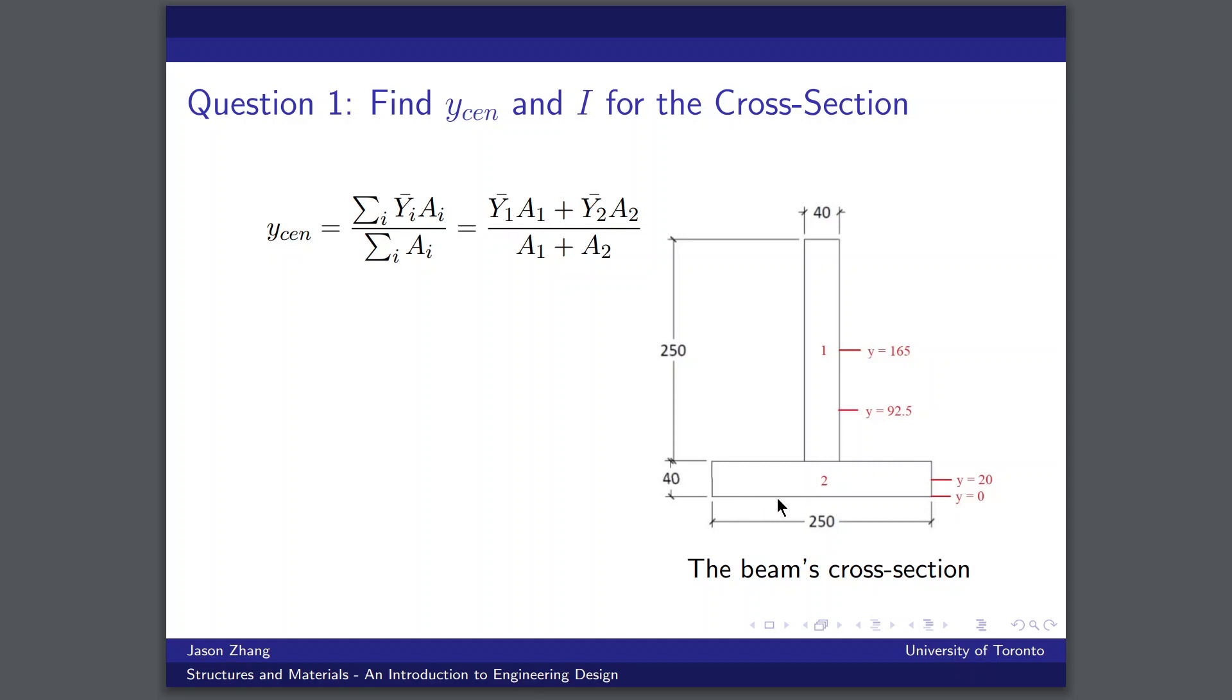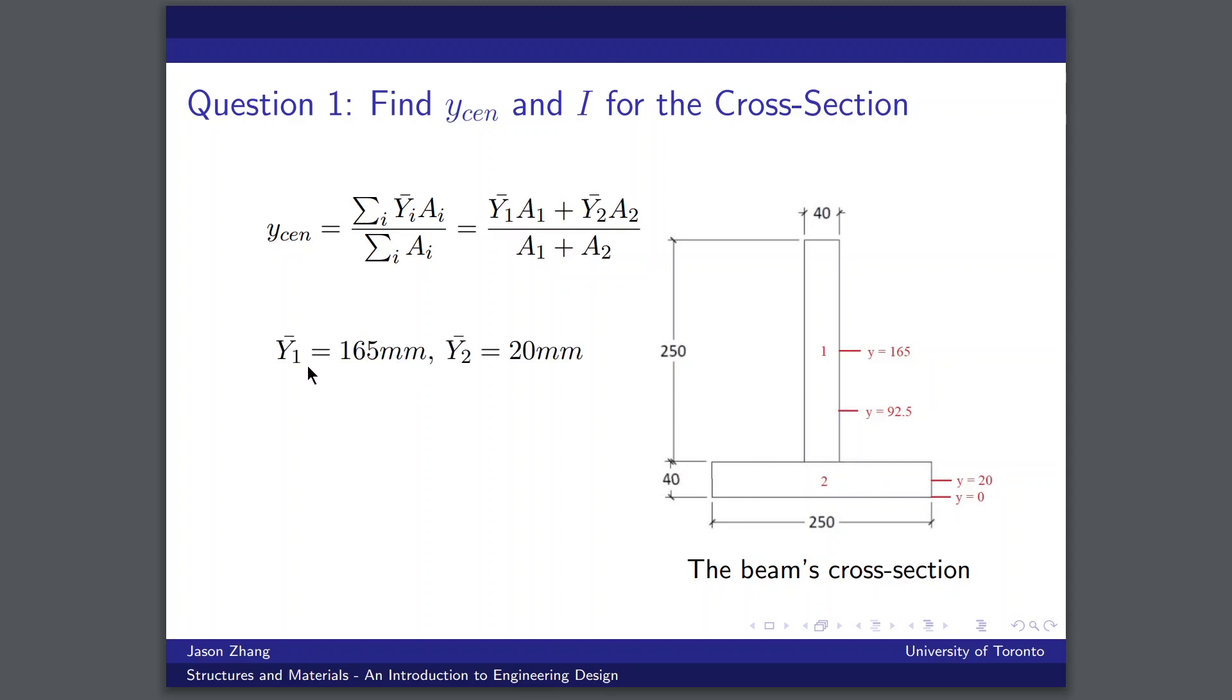And what we should notice is that the centroidal axis of each of these rectangles is pretty easy to find because of the symmetry of the rectangle about its mid-height. The centroidal axis is simply the mid-height. And if we set our arbitrary reference to be y equals zero at the bottom of the cross-section, we find that the centroidal axis of rectangle one is at 165 millimeters and 20 millimeters for the other rectangle.